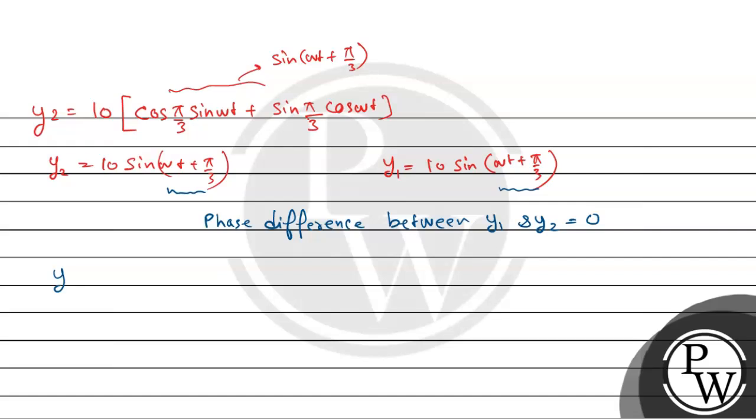The resultant wave y equals y1 plus y2. Amplitude of the resultant wave a dash equals root over of 10 square plus 10 square plus 2 into 10 into 10 into cos of 0 degree.